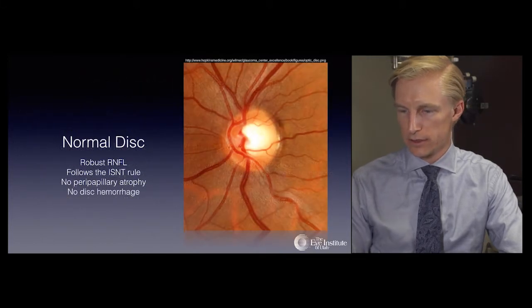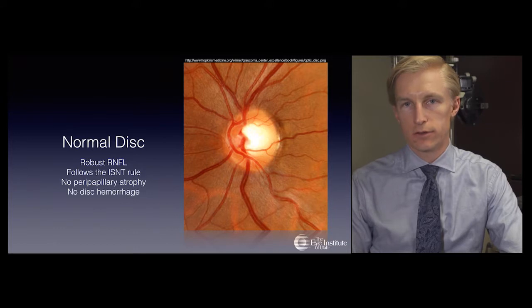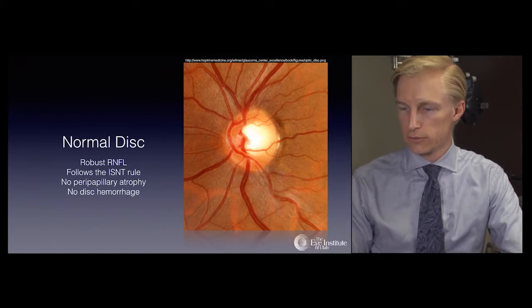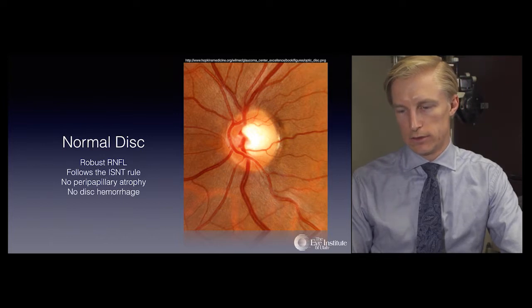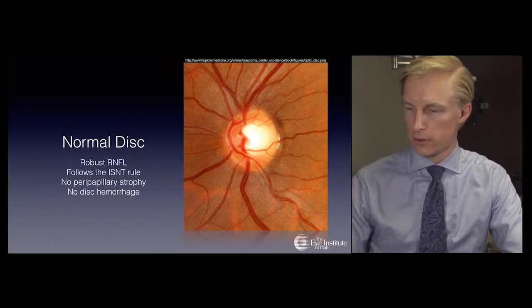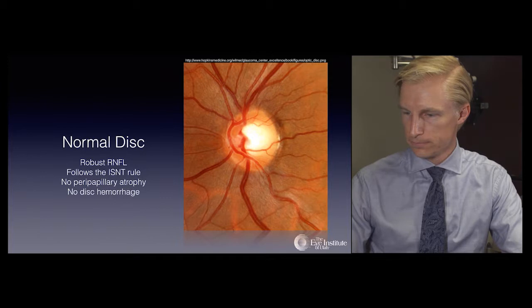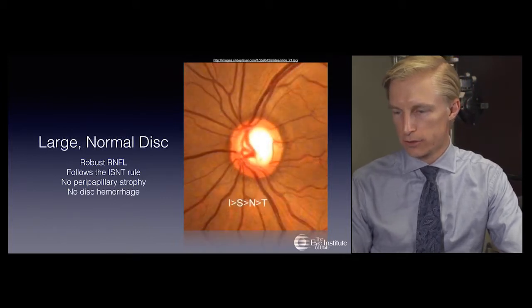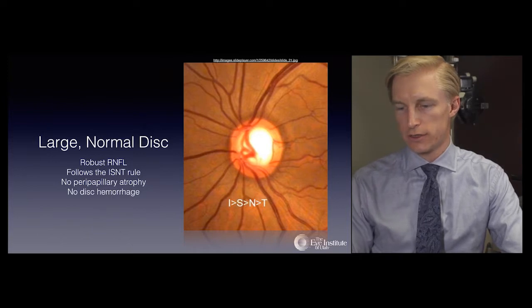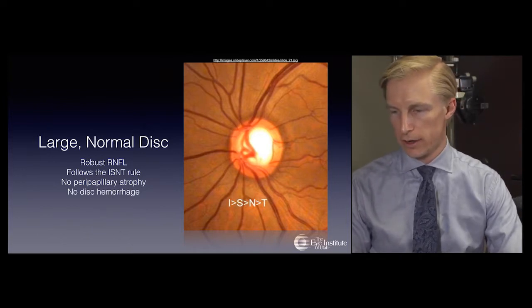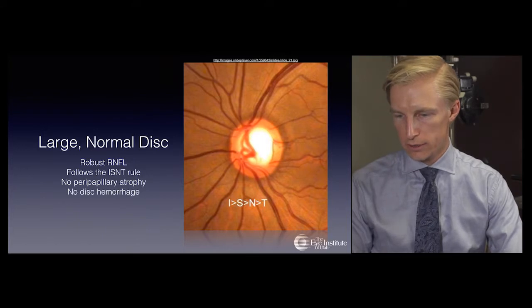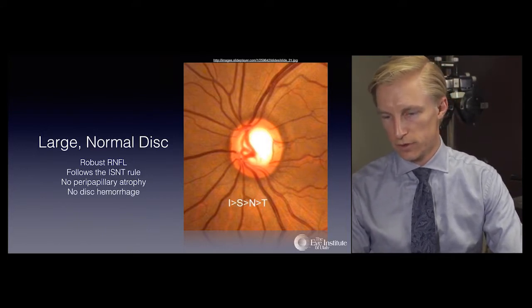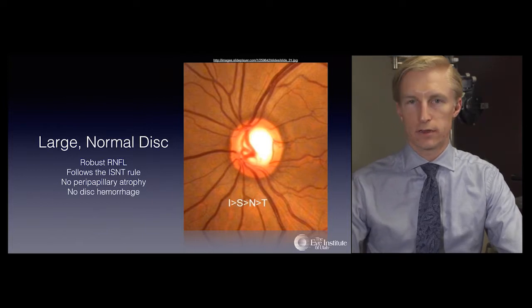This is an excellent example of a normal disc showing a robust retinal nerve fiber layer. The ISN'T rule is followed, there is no peripapillary atrophy, and no disc hemorrhage. A large normal disc may have an increased cup-to-disc ratio but is otherwise healthy, still having a robust nerve fiber layer, following the ISN'T rule, with no peripapillary atrophy and no disc hemorrhage.